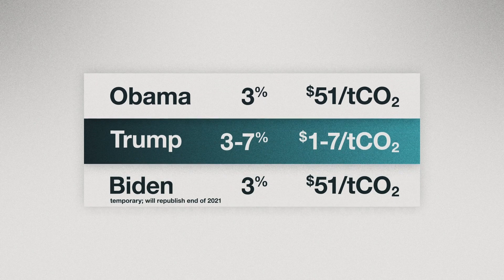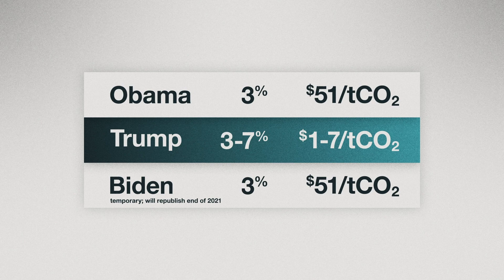On the first day of the Biden administration in 2021, President Biden signed an executive order temporarily restoring the discount rate to the Obama-era 3%. This interim value would be used until the end of 2021, when the Biden administration was expected to release a new official value for the social cost of carbon — one that would help the United States reach ambitious climate goals such as building a net-zero economy by 2050.